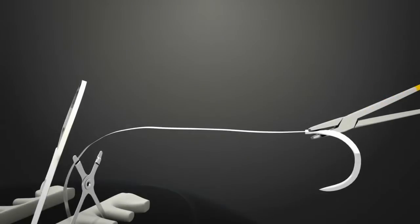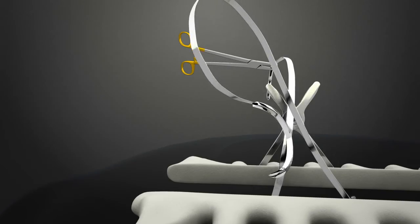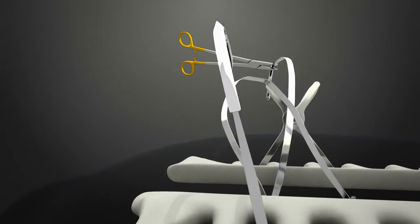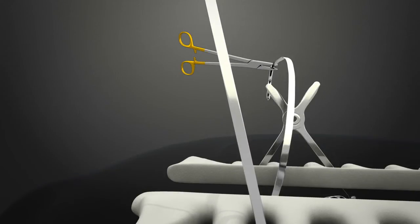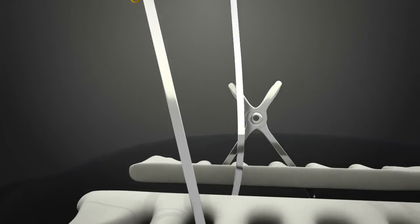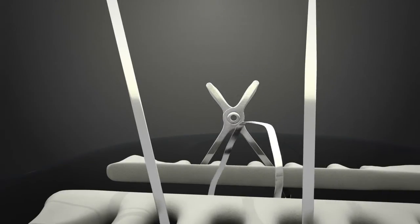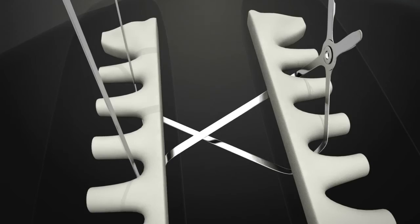The cephalad needle and strap are protected, and the caudal needle is passed through the near sternal half in a more cephalad position on the sternum. Then the cephalad needle is placed in a more caudal position on the near sternal half, thus crossing the straps.